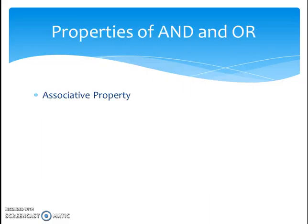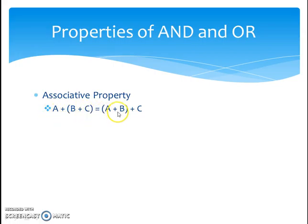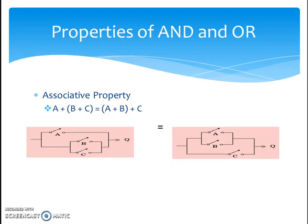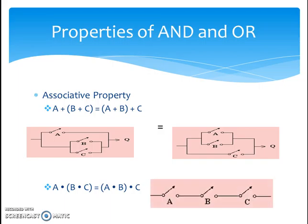The next property of AND and OR is the associative property. It simply states that the position of the brackets in the logic equation doesn't matter, and both sides of the logic equation will be the same. That is, A OR (B plus C) equals (A OR B) OR C. The electrical analysis shows that both left-hand side and right-hand side outputs are equal. The same associative property applies to the AND gate as well.